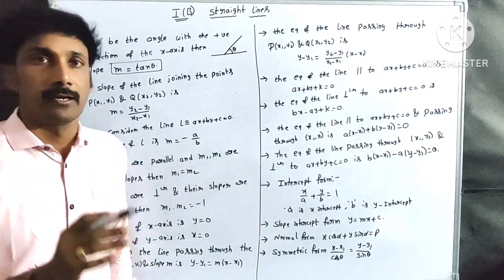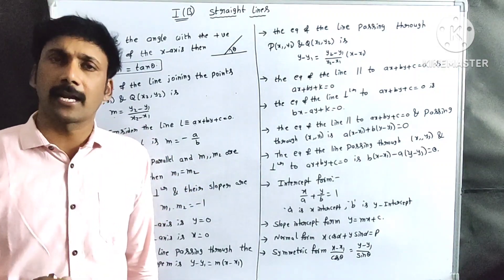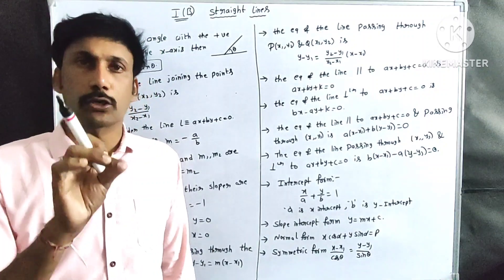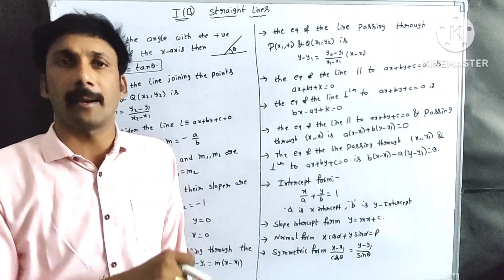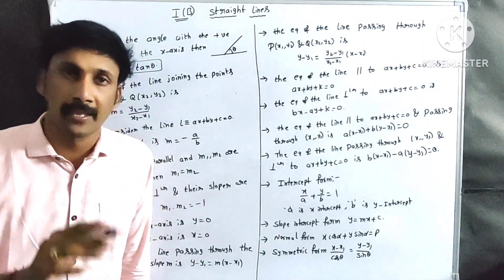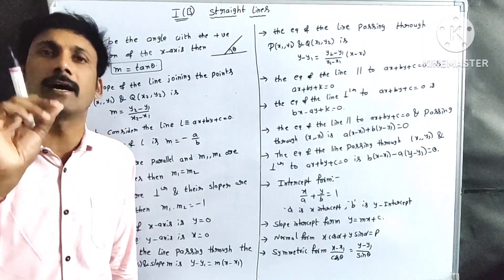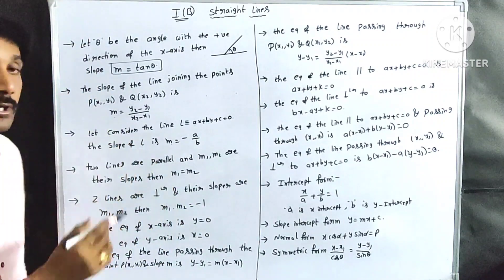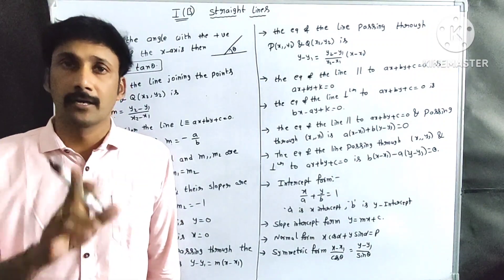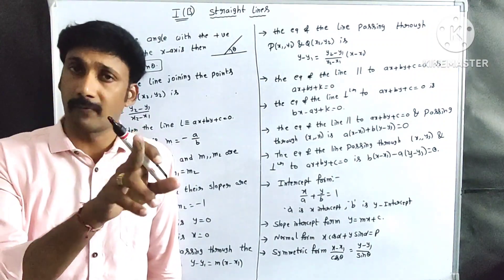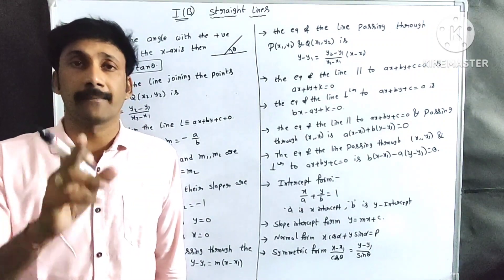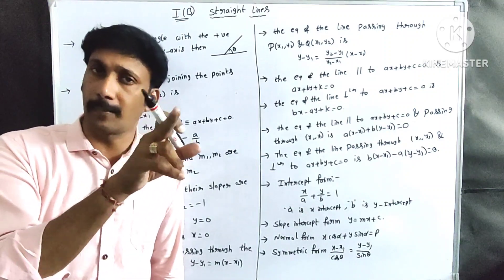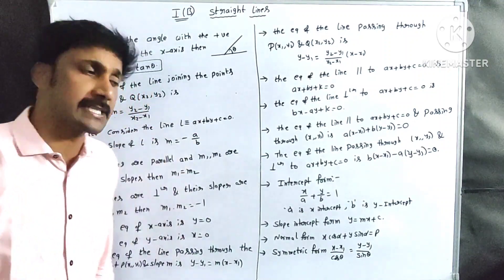Two lines are parallel when their slopes are always equal: m1 equal to m2. Two lines are perpendicular when their slopes m1 and m2 satisfy the relation m1 into m2 equal to minus 1.